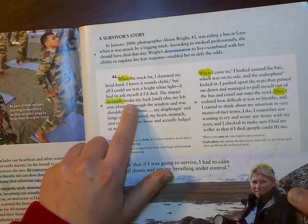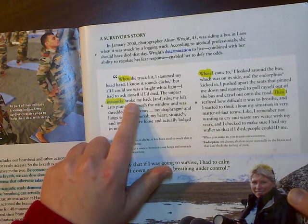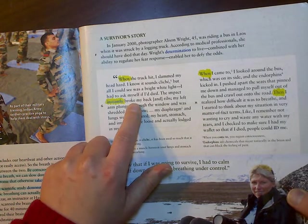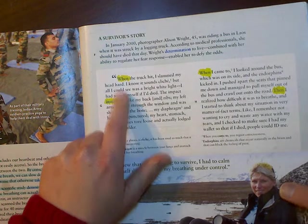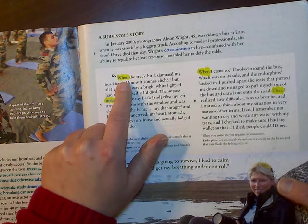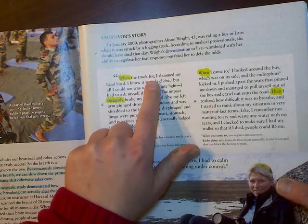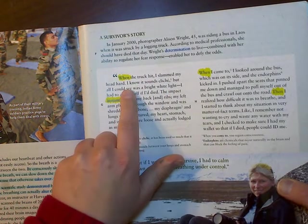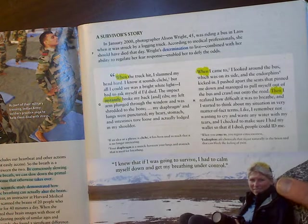We have when, when the truck hit. And then I have instantly. So this is an adverb saying, when did I break my back. Instantly. It happened very quickly. And when is one of those special words that creates a complex sentence. When the truck hit, comma, I slammed my head hard.